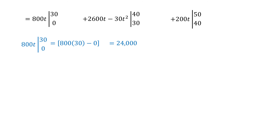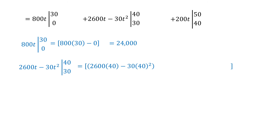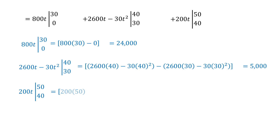Now evaluate the second portion: 2,600T minus 30T squared from 30 to 40. Evaluating at 40 first: 2,600 times 40 minus 30 times 40 squared; then for the lower limit: 2,600 times 30 minus 30 times 30 squared. Computing that, the value is 5,000. Finally, the last integral: 200T from 40 to 50 — 200 evaluated at 50 minus 200 evaluated at 40 — that difference is 2,000.